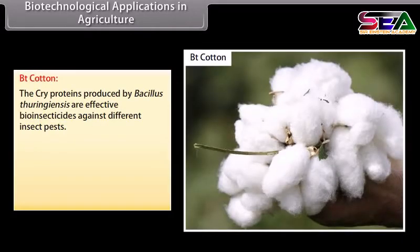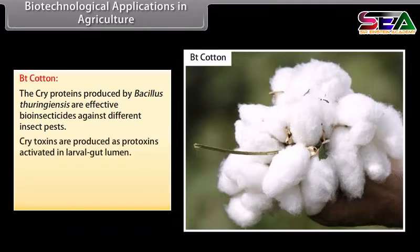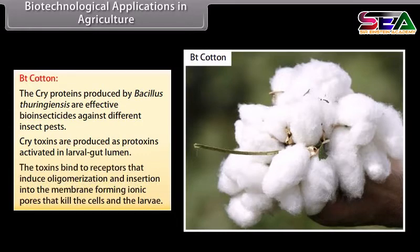BT cotton: the cry proteins produced by Bacillus thuringiensis are effective bio-insecticides against different insect pests. Cry toxins are produced as protoxins and activated in the larval gut lumen. The toxins bind to receptors that induce oligomerization and insertion into the membrane, forming ionic pores that kill the cells and the larva.